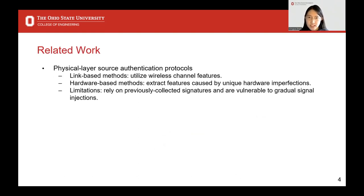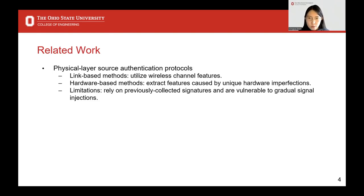We believe the above attack model based on malicious full duplex relays is hard to detect with existing methods. Two lines of closely related work exist. The first is physical layer source authentication protocols, which extract features based on channels or hardware imperfections from received signals and compare them with previously collected signatures. We believe their dependence on clean ground truth signatures limits their applications. What's more, an attacker can perform gradual channel injections to bypass authentication protocols, especially those that need to update their signatures periodically.